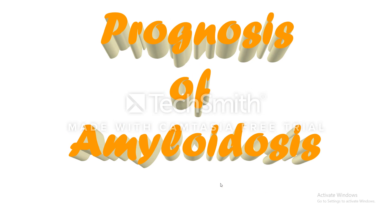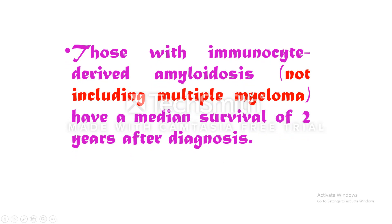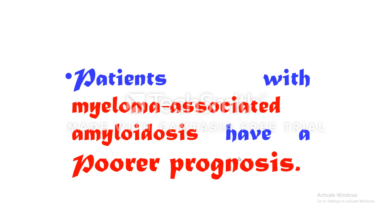What is the prognosis of amyloidosis? The prognosis for patients with generalized amyloidosis is poor. Those with immunocyte-derived amyloidosis — not including multiple myeloma, so those with B-cell lymphoma or plasmacytoma — have a median survival of two years after diagnosis. Patients with myeloma-associated amyloidosis have a poorer prognosis, worse than two years.